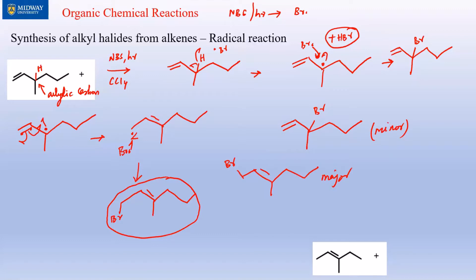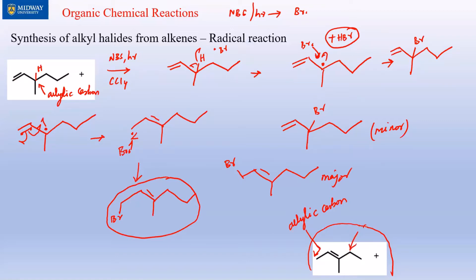You can only move the double bond to the side if there's an allylic carbon containing a hydrogen. We were only able to move one more spot because there is no allylic carbon on the other side. However, in the practice problem, the double bond is sandwiched by two allylic carbons on both sides.